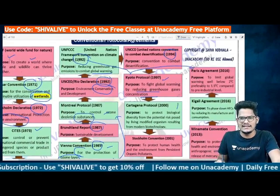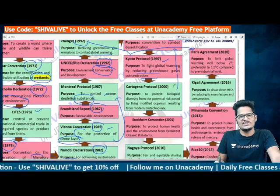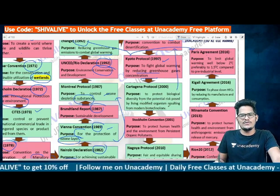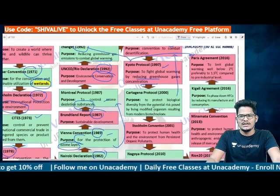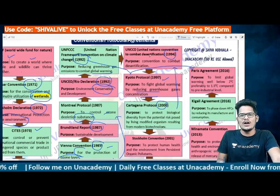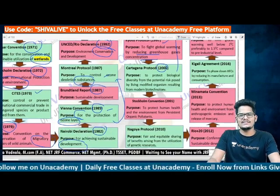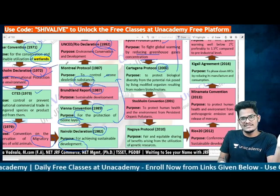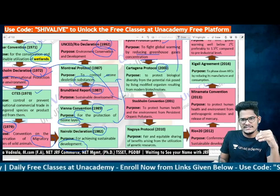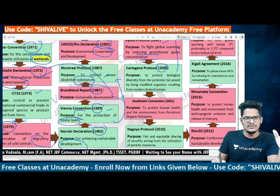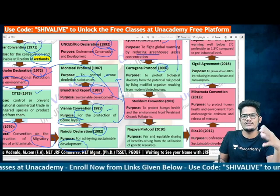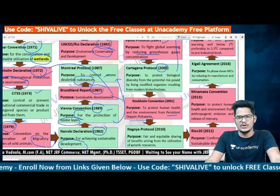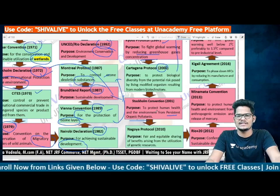The Cartagena Protocol (2000) evolved out of the Convention on Biological Diversity. It aims to protect biological diversity from potential risks posed by living modified organisms resulting from modern biotechnology. The Stockholm Convention (2001) — distinct from the 1972 Stockholm Declaration — focuses on protecting human health and the environment from persistent organic pollutants.